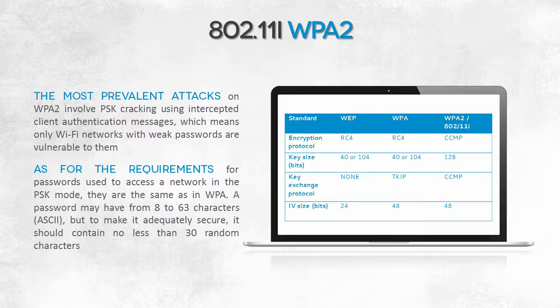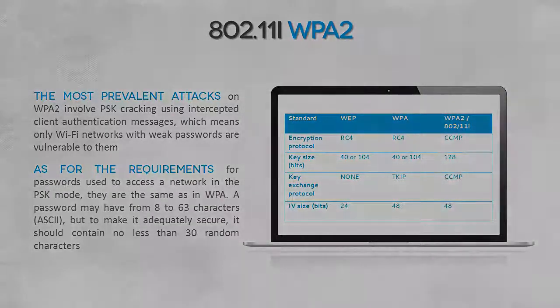For wireless networks, the situation is much simpler. A wireless network administrator responsible for security has to make two simple decisions: select a method for authenticating users — this should be done through a RADIUS server — and choose a method for ensuring the confidentiality and authenticity of exchanged data, for which WPA2 technology should be employed. Selecting these two options will practically guarantee a very high level of network security.